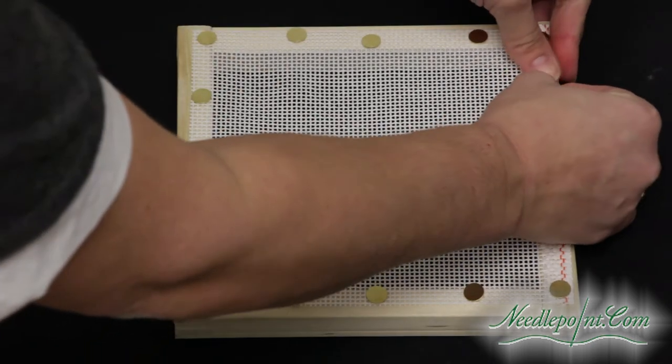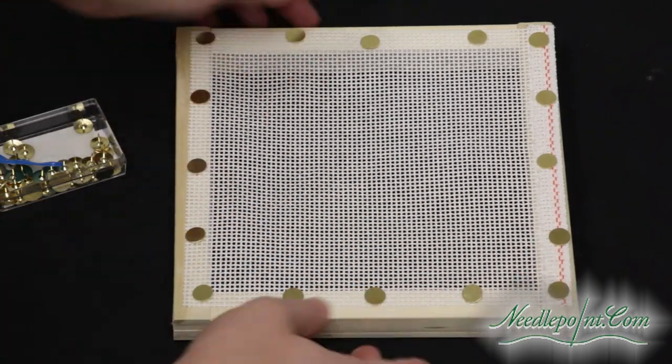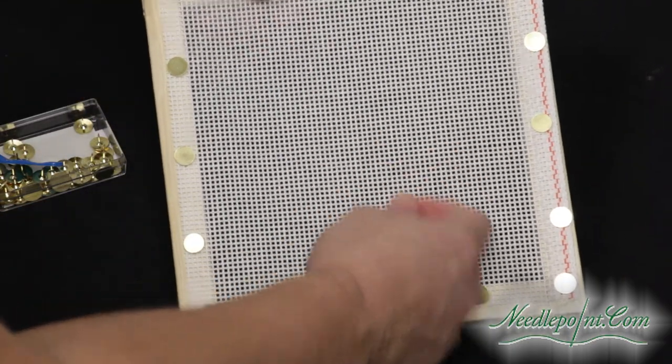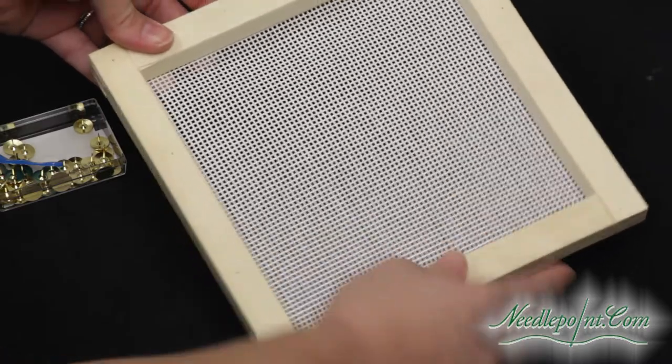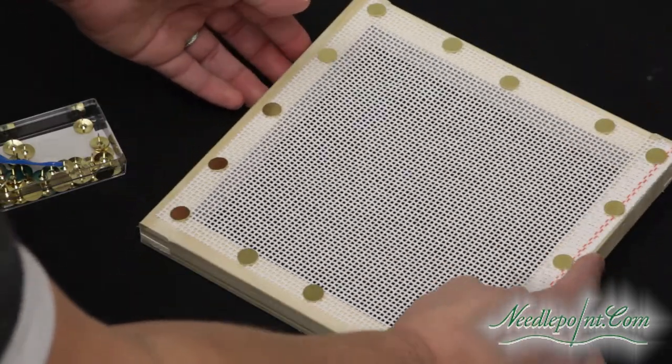Once the canvas is attached, you can choose to either stitch with the canvas on top of the frame, or you can turn the frame over and stitch in the well, or with the canvas towards the bottom.